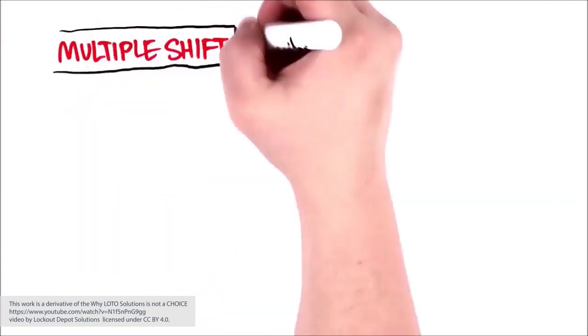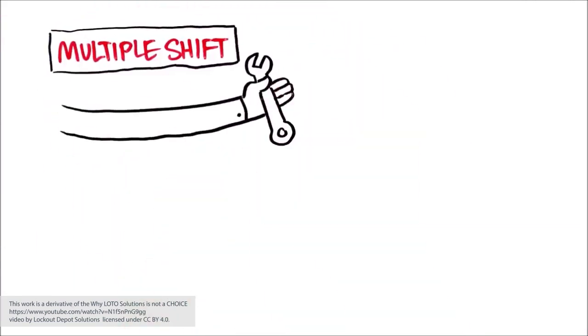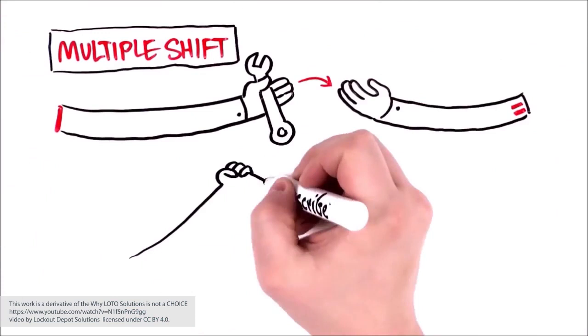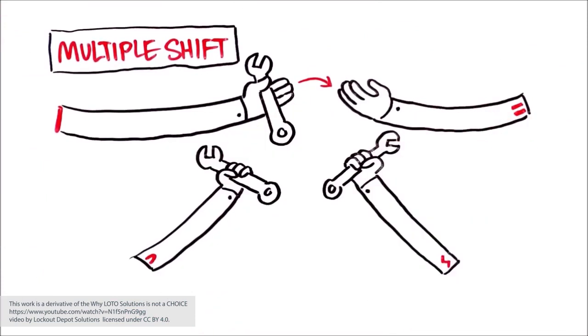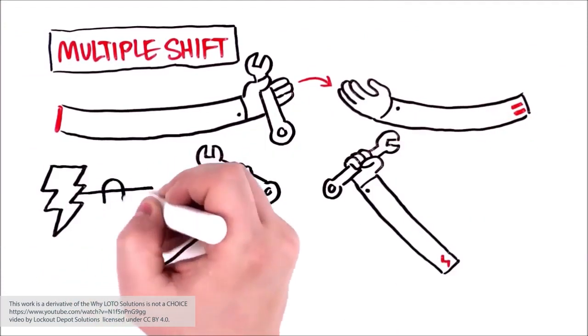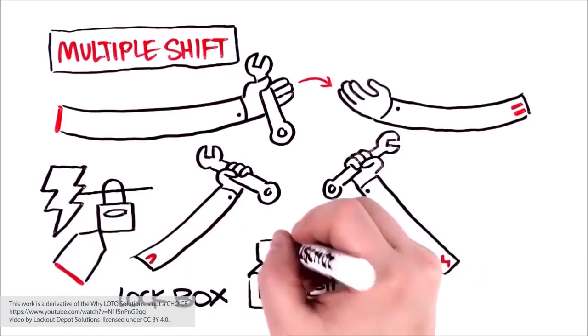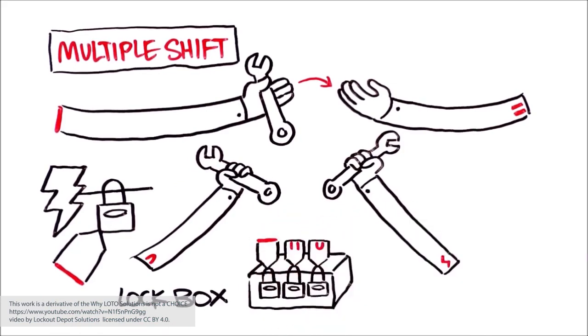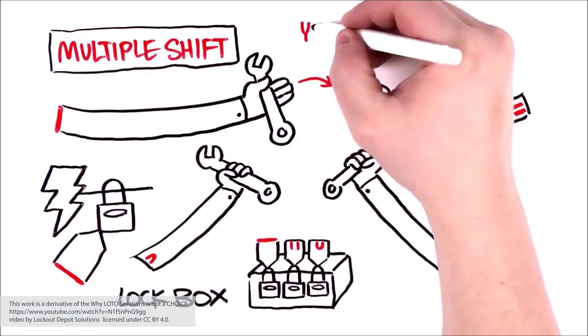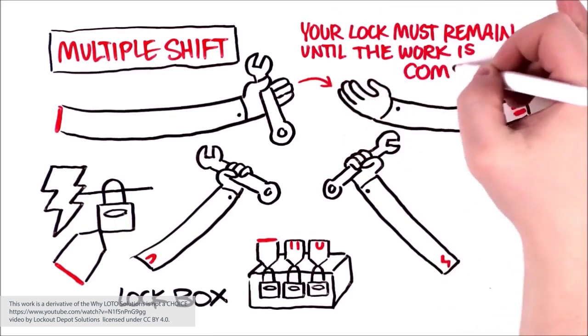What about multiple shift work? Whether it's a situation where you're passing the work onto the next shift or you're performing a group LOTO procedure, it's critical that you maintain continuity of hazardous energy control. Be sure you never leave a lock box or energy source uncontrolled or unlocked. Usually one individual is assigned primary responsibility for the lockout. That individual's lock must remain on until the work is complete.